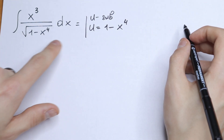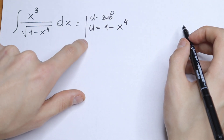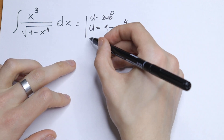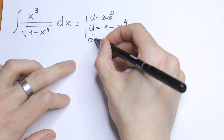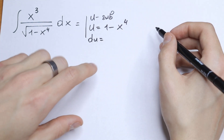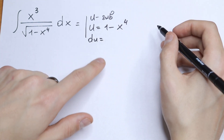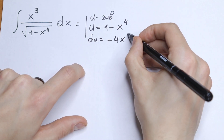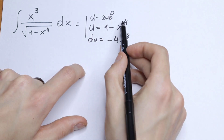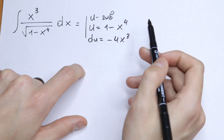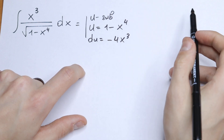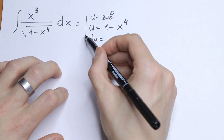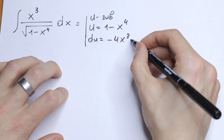Now let's find our derivative, because we need to change du and dx. We will have du equal to minus 4x cubed dx. The derivative of 1 is 0, so this is our derivative times dx.